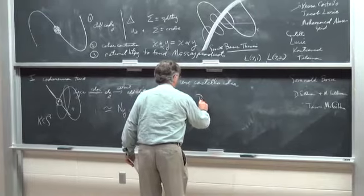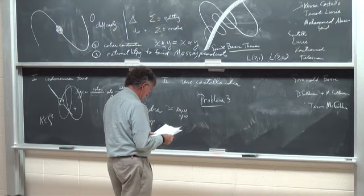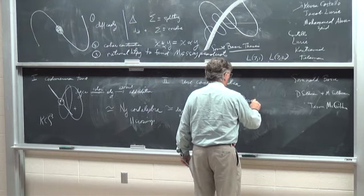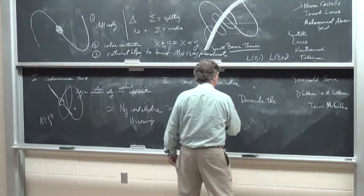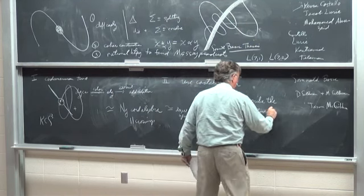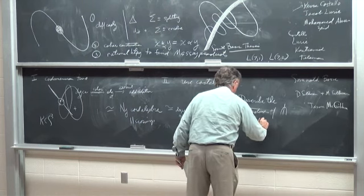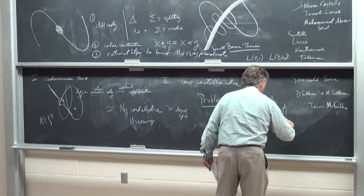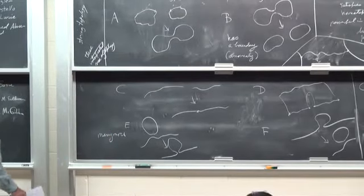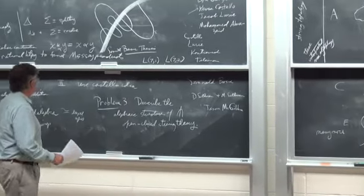Problem three: describe the algebraic structure of this transversal open string theory. You can get rid of the anomaly and the rules are different — this is not universal string topology because you're restricting the space of strings.